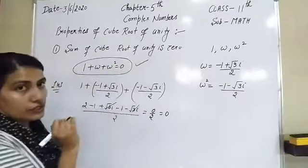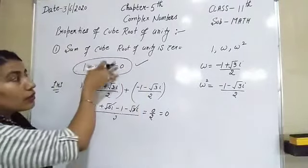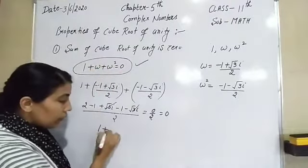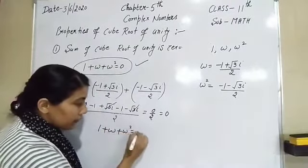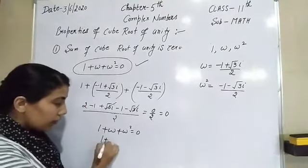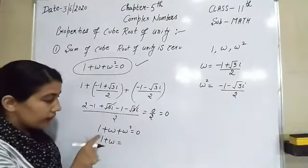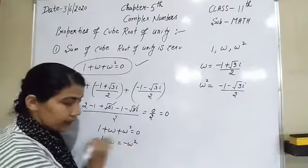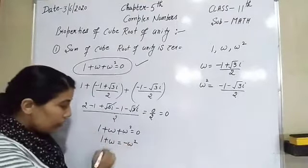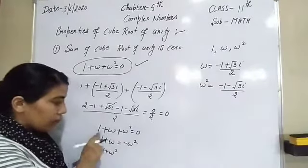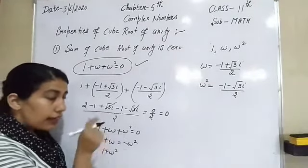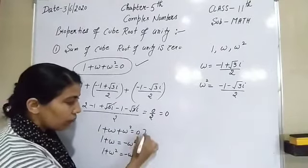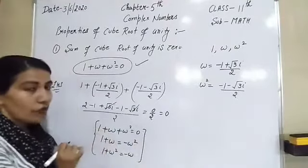This is very important because in your worksheet you have questions that require this result. For example, if given 1 + ω, you can directly substitute its value as −ω². Similarly, if given 1 + ω², its value is −ω. That property is very important.